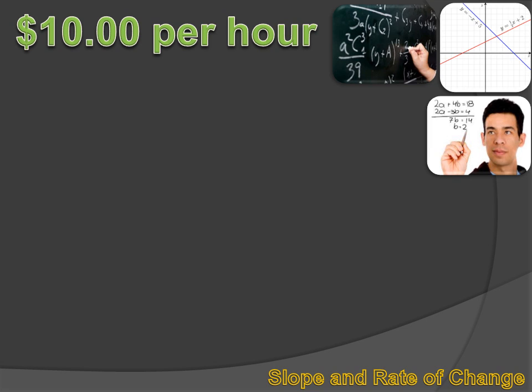You have a babysitting business, and you earn $10 per hour. Well, that's a unit rate. You earn $10 per one hour. But it's also a rate of change. $10 per one hour. An increase in your labor of one hour results in an increase in your earnings of $10.